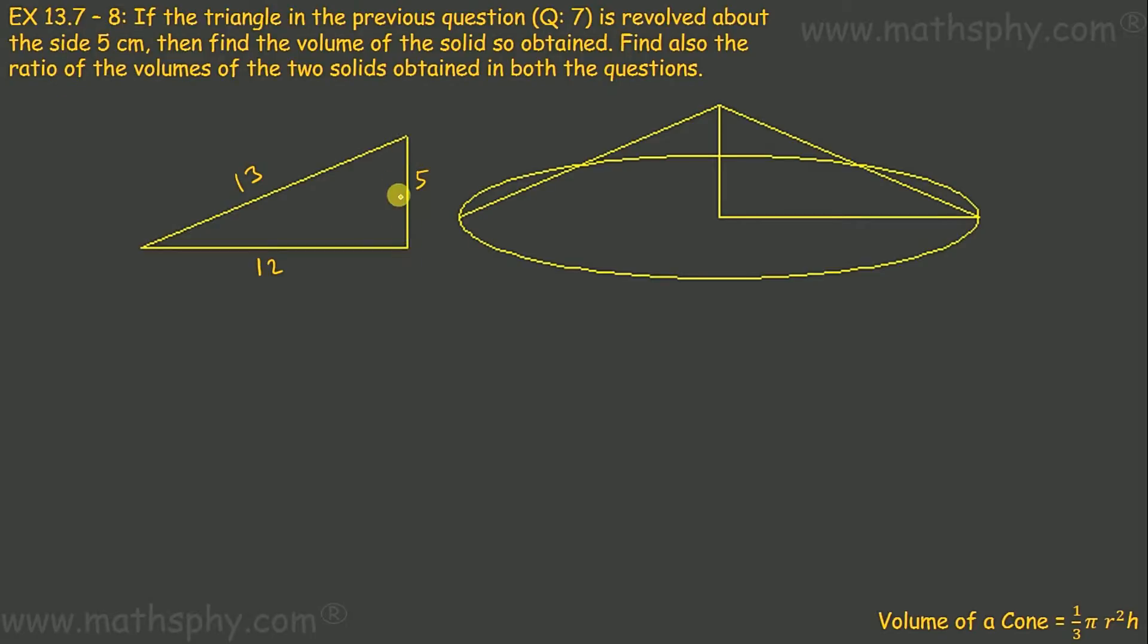Now I have to keep this side still and revolve this triangle 360 degrees. I will get this type of cone where radius would be 12, hypotenuse would be 13 which is slant height now, and height would be 5. It says find the volume of the solid so obtained.